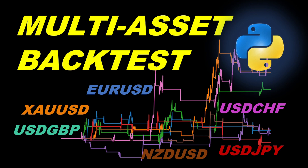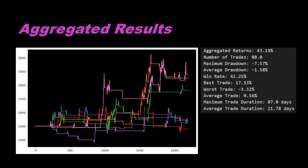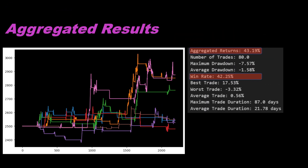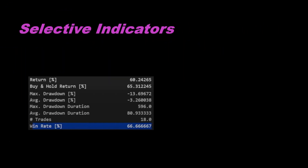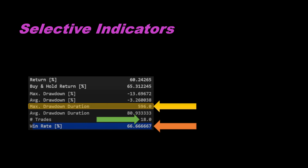Hi and welcome back. Today I will show you how you can test and optimize a strategy on multiple assets, and how you can aggregate the results and increase the total win rate and total returns. The reason this is an important approach in trading is that sometimes we test strategies with very selective indicators, leading to a very high win rate but a low number of trades, meaning the automated system is idling and not trading the market for long periods.